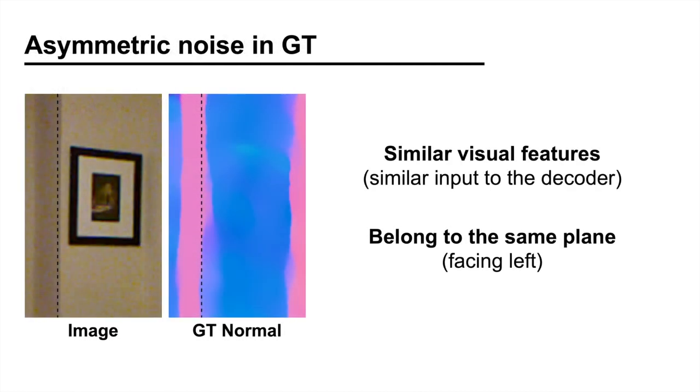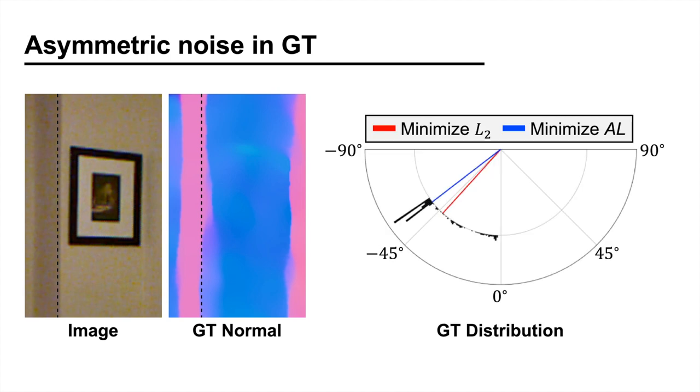Consider the pixels along this vertical line. The pixels have similar visual features, and belong to the same plane. Ideally, the ground truth should be the same for all pixels, so that the network can learn the mapping between the two. However, when we plot the distribution of ground truth, we can see that many of the pixels have incorrect ground truth. Such noise is caused by the neighboring pixels belonging to a different plane, and for this reason, the noise is generally asymmetric around the true normal.